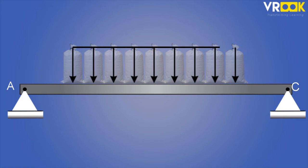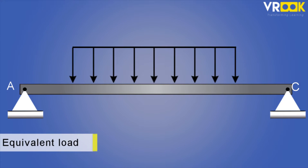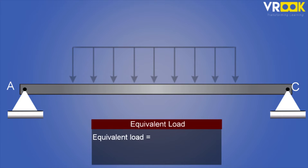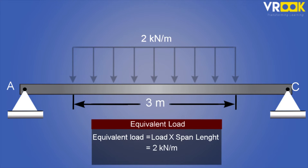All these forces can be replaced by a single equivalent load which is given by a simple formula. Equivalent load is the load acting on the beam multiplied by the span length for which the load is acting. In our example 2 kilonewton per meter is acting on the beam for a span of 3 meters. Then the equivalent load will be 2 kilonewton per meter multiplied by 3 meters that is 6 kilonewton point load.